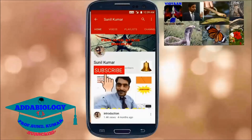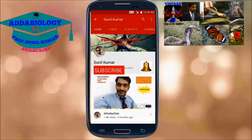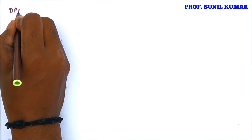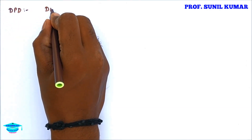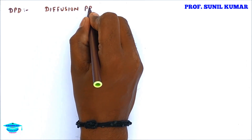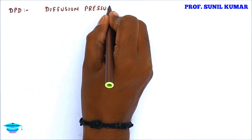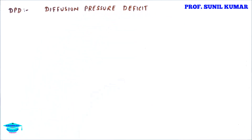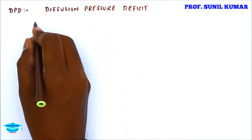Hello friends, press the subscribe button and hit the bell icon for more such easy videos. I'm back with a new video, and this video talks about DPD — Diffusion Pressure Deficit — one of the most important topics of transport in plants.